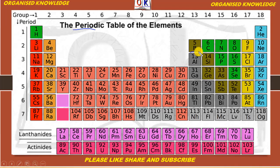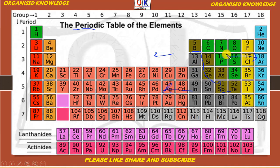Is periodic table mein dekhen — idhar wale sare metals hain. Is taraf wali metals hain, aur yoh jo hain these are non-metals. Aur yoh jo aapko boron, silicon, germanium, arsenic, antimony, tellurium — yoh sab kya hain, these are metalloids. Jo metals hain unki characteristics alag hoti hain, jaise iron, copper. Lekin jo non-metals hain unki characteristics metals se bilkul different hain, like oxygen, nitrogen, carbon. Jo metalloids hain inki jo characteristics hain woh in ke beech ki hain — kuch toh metals yaani dhatu woon se milti hain aur kuch non-metals yaani adhatu woon se.